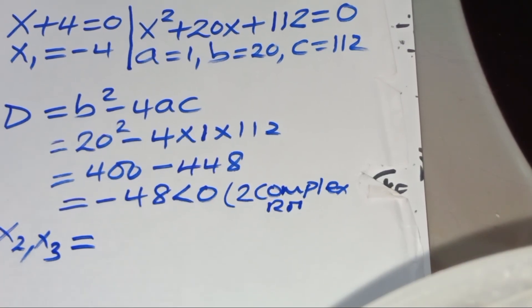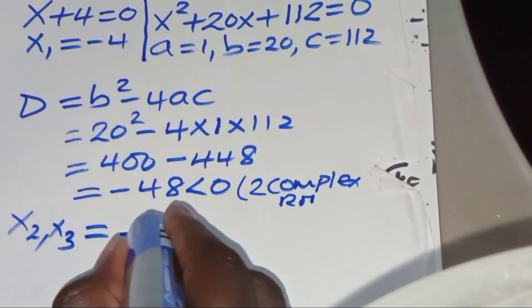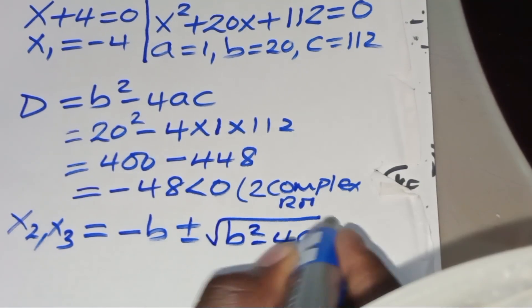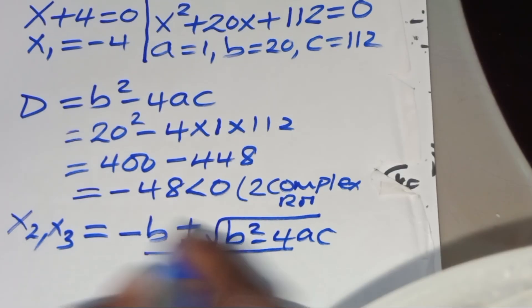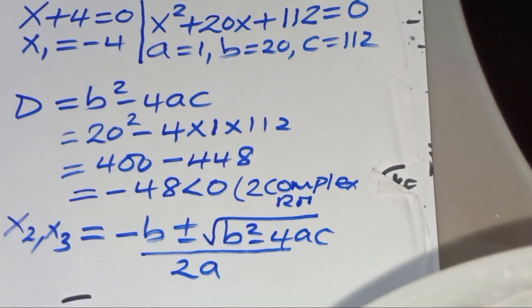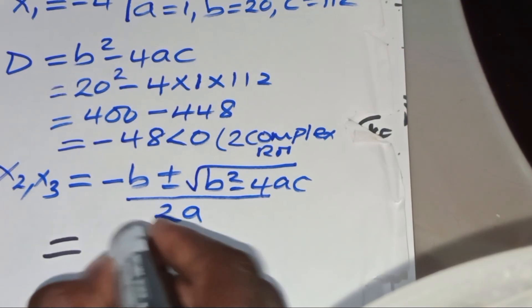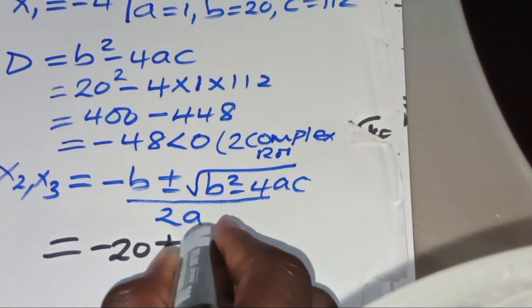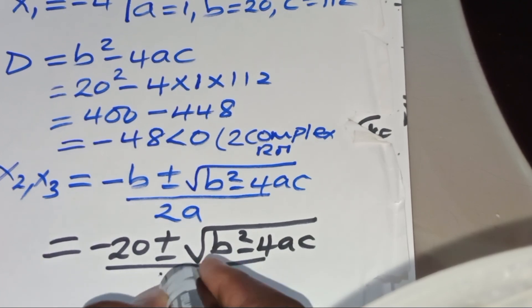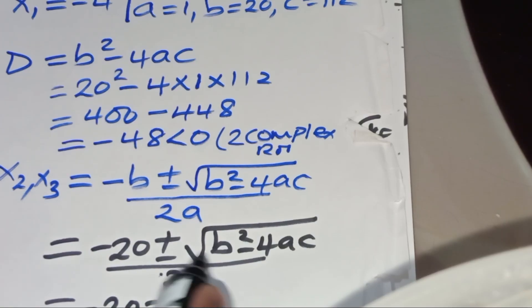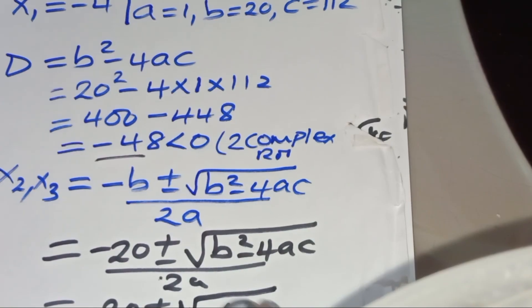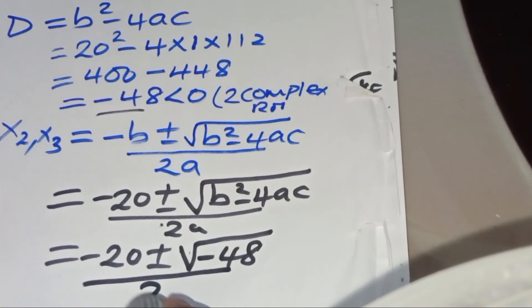To solve for x₂ and x₃, we apply the quadratic formula: x = (−b ± √(b² − 4ac)) / 2a. Substituting, we get (−20 ± √(−48)) / 2.